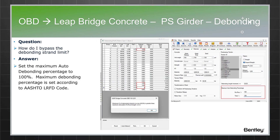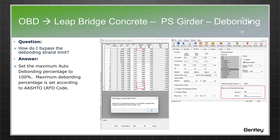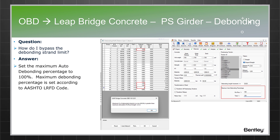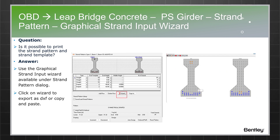Regarding debonding: when stresses are too high, designers typically debond tendons. There are limitations per AASHTO code. To bypass the debonding strand limit — for example, if the limit is 45% — the user has to go to the Material tab, under Maximum Auto Debonding Percentage per row and total percentage, and change it to 100%. The maximum debonding percentage is set according to AASHTO LRFD code.